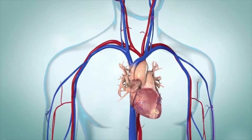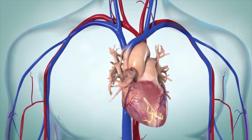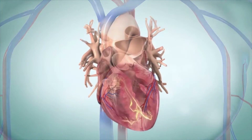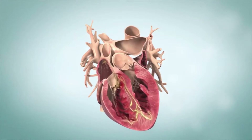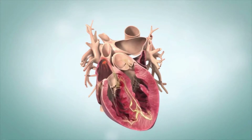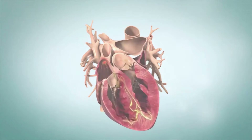The familiar lub-dub rhythm of your heart is very organized. It's controlled by a built-in electrical system, but some things can cause that electrical system to go haywire, and that can cause a condition called atrial flutter.